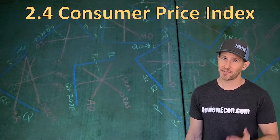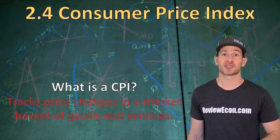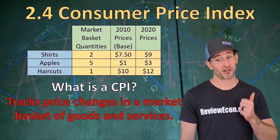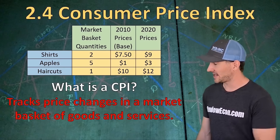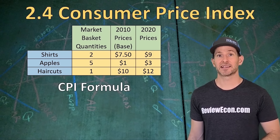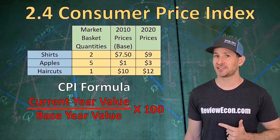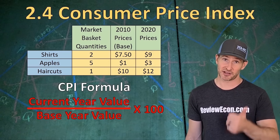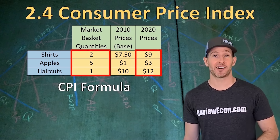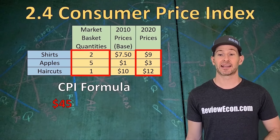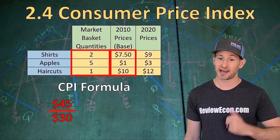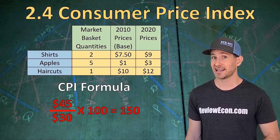You can calculate a consumer price index in much the same way. The CPI tracks price changes for a market basket of goods and services. Here we have a market basket with shirts, apples, and haircuts, with both 2010 and 2020 prices. The market basket has specific quantities that do not change — this is the weighting of the basket. To find the CPI, take the current year value of the market basket divided by the base year value, times 100. Using 2020 prices gives a current value of $45; using 2010 base year prices gives $30. Dividing 45 by 30 times 100 gives us a CPI of 150.